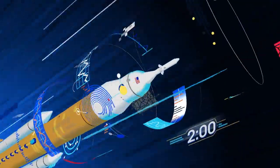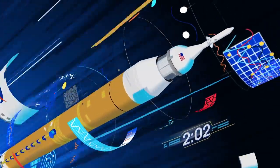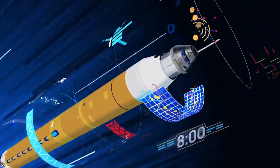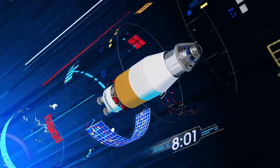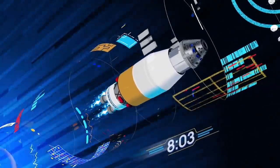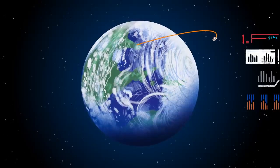Two minutes after ignition, the solid rocket boosters are spent and released. Eight minutes after launch, the core stage is depleted and separated. The upper stage fires briefly, placing Orion into a parking orbit around the Earth.